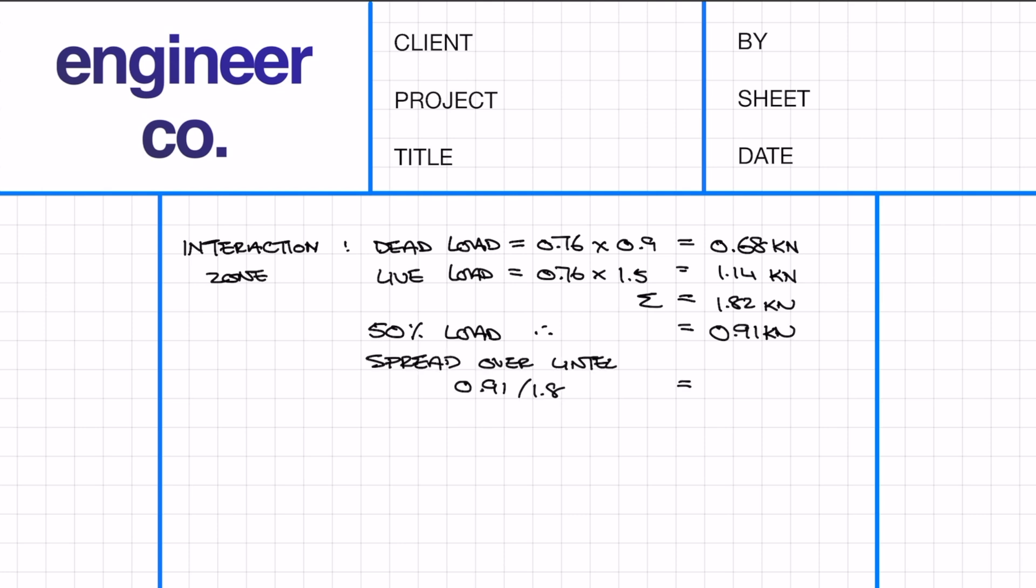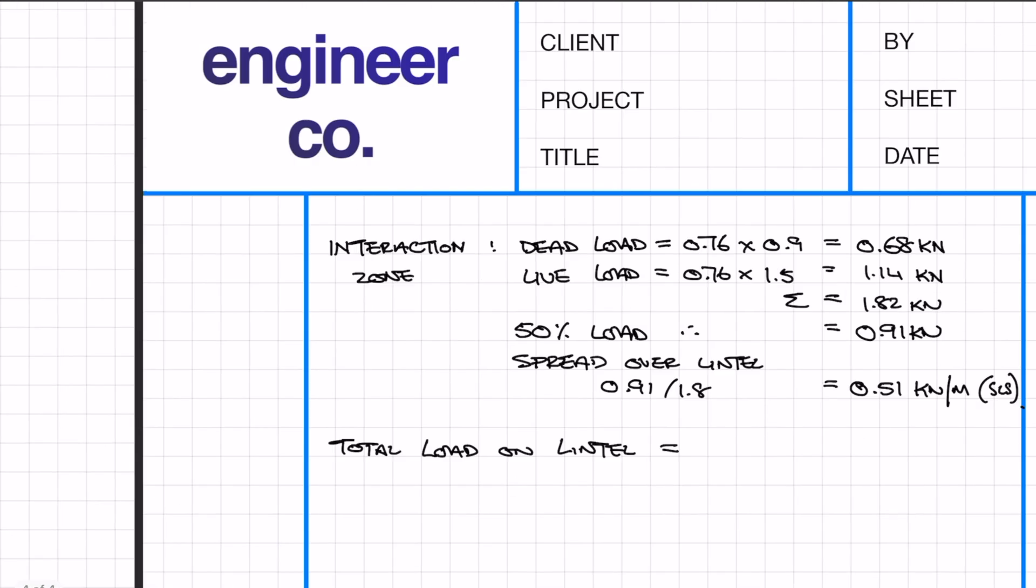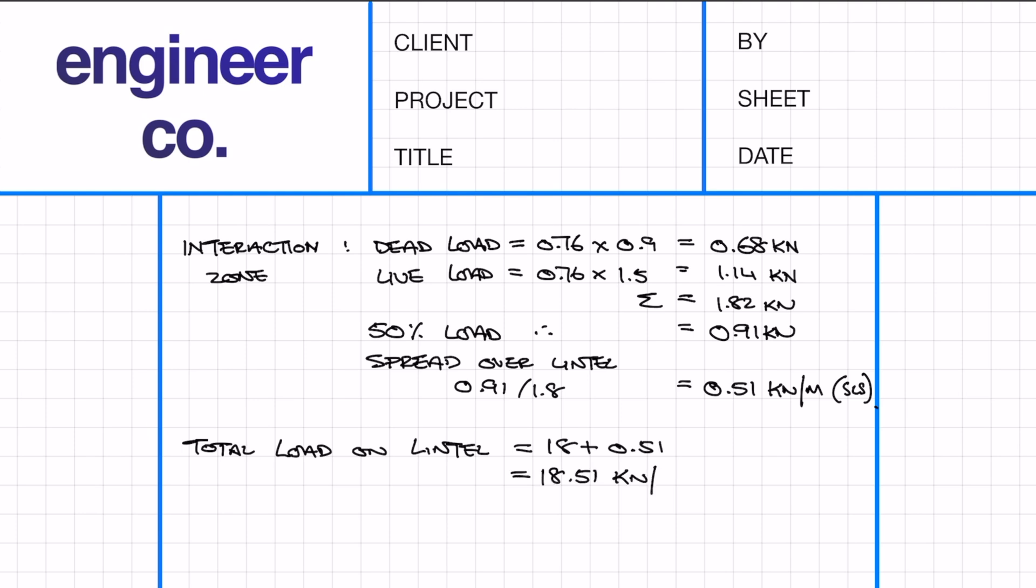I actually forget to multiply by half the span which was 4 over 2 so all the values here need to be times by 2. Then we can add all the loads together and work out the total load on the lintel.